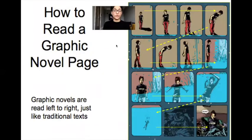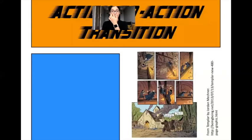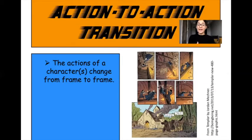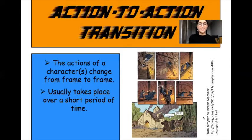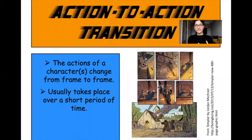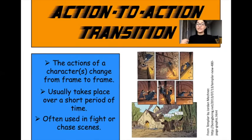How to read a graphic novel page: graphic novels are read left to right, just like traditional texts. Action-to-action transition — the actions of a character change from frame to frame. Each panel in a graphic novel will show you something different; the character should be doing something different in each one. This usually takes place over a short period of time — one page could tell a story that would normally last about 30 seconds. Action-to-action transition is often used in fight or chase scenes.